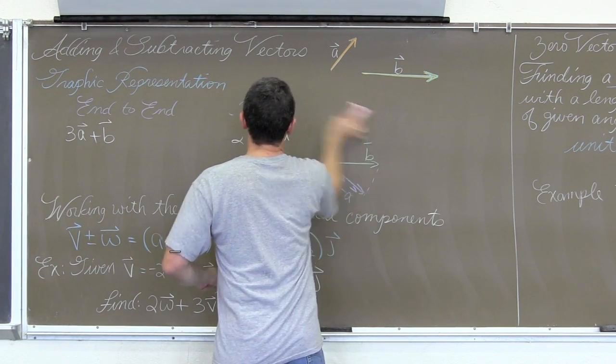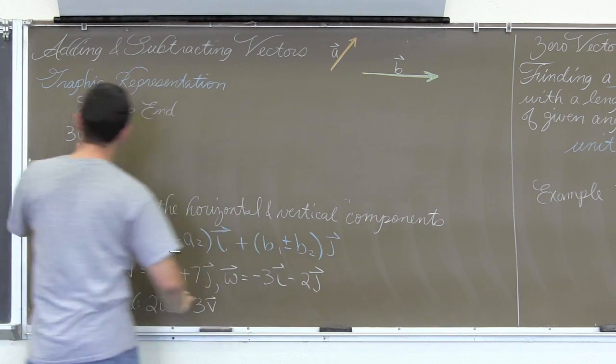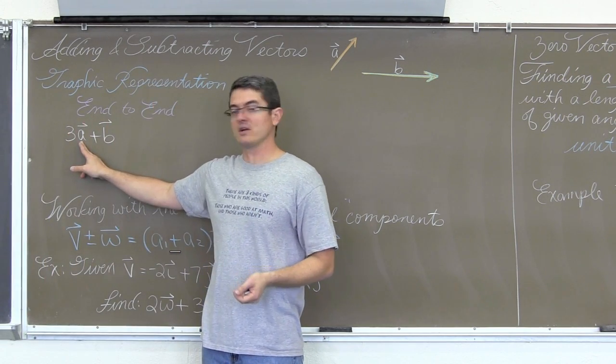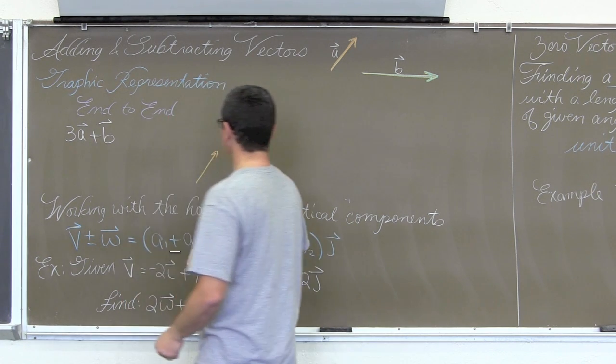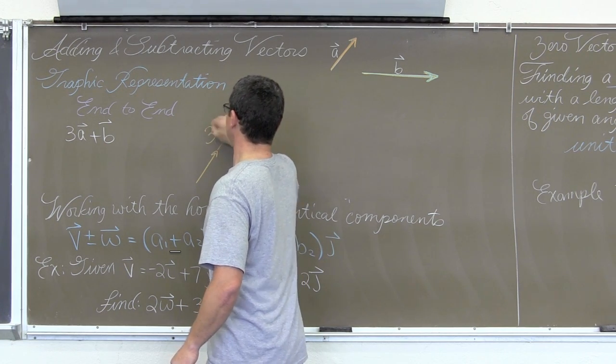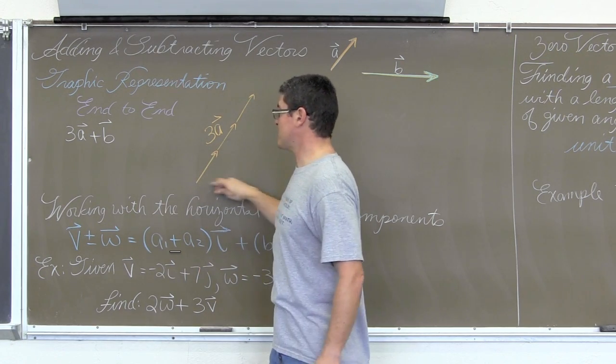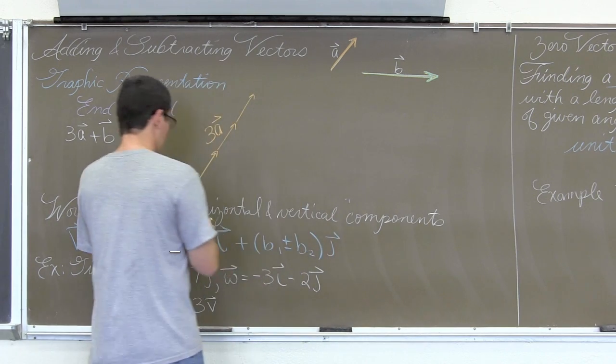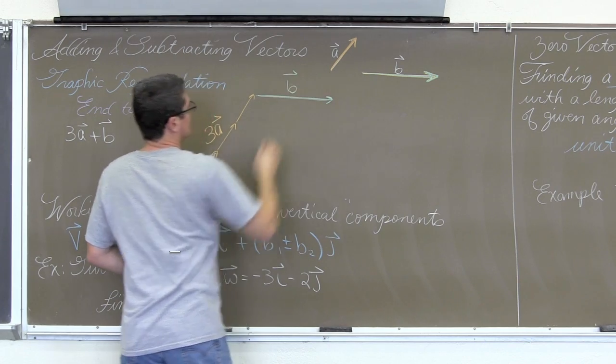3a plus vector b is going to be, take vector a, there is no negative in front of it, so we are going to keep it in the same direction, just make it three times as long. Here is one length of a, two length of a, and there is the best as I can sketch, 3a. And then, instead of drawing b starting from the same point, I am going to go end to end and start b up here. So, vector b is somewhere around that length.